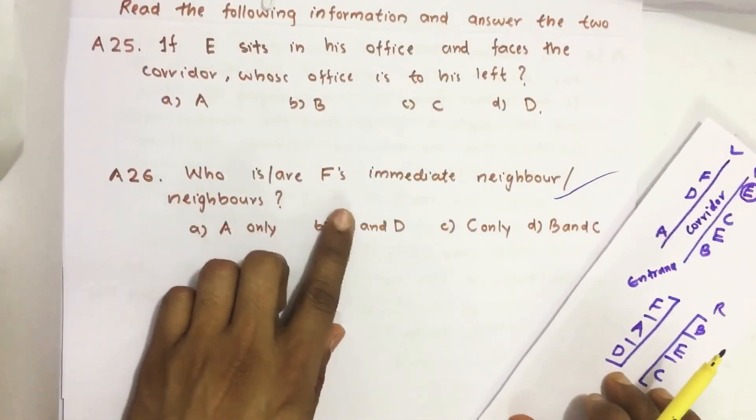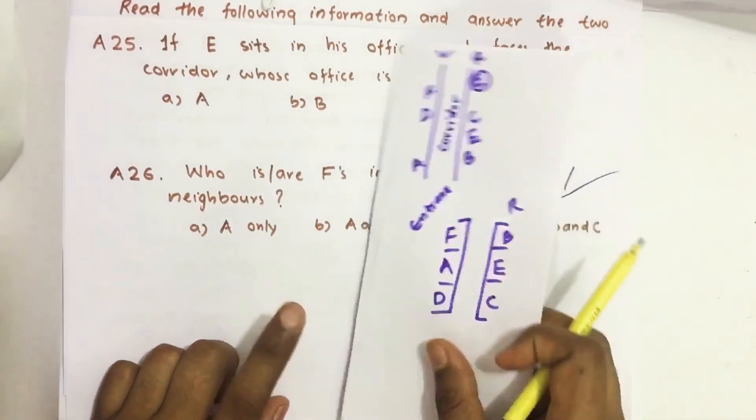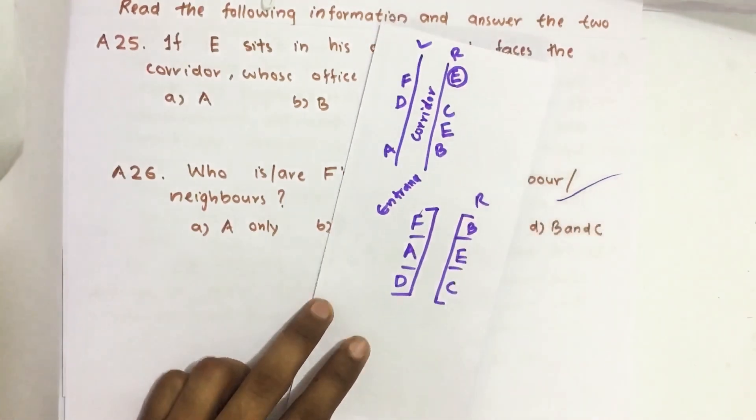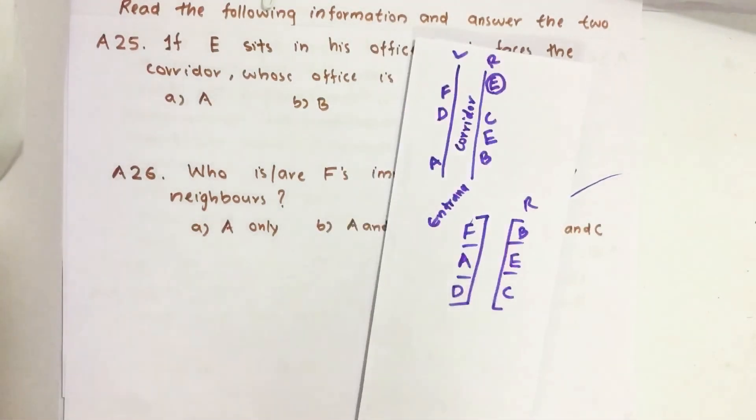Who is or are F's immediate neighbor or neighbors? Here F's immediate neighbor is A only. If you have any suggestions, please do comment. Don't forget to like, share and subscribe our channel. Keep supporting and loving us. Jai Hind.